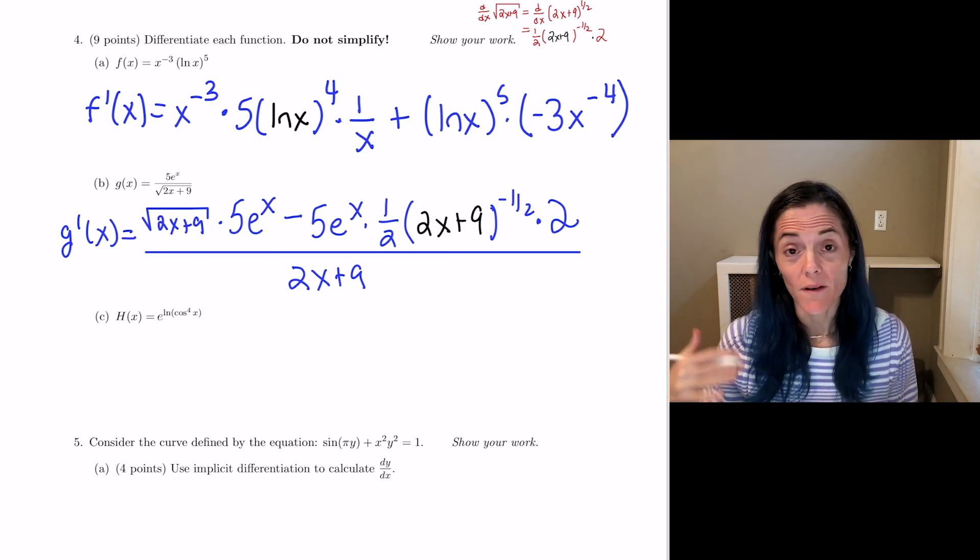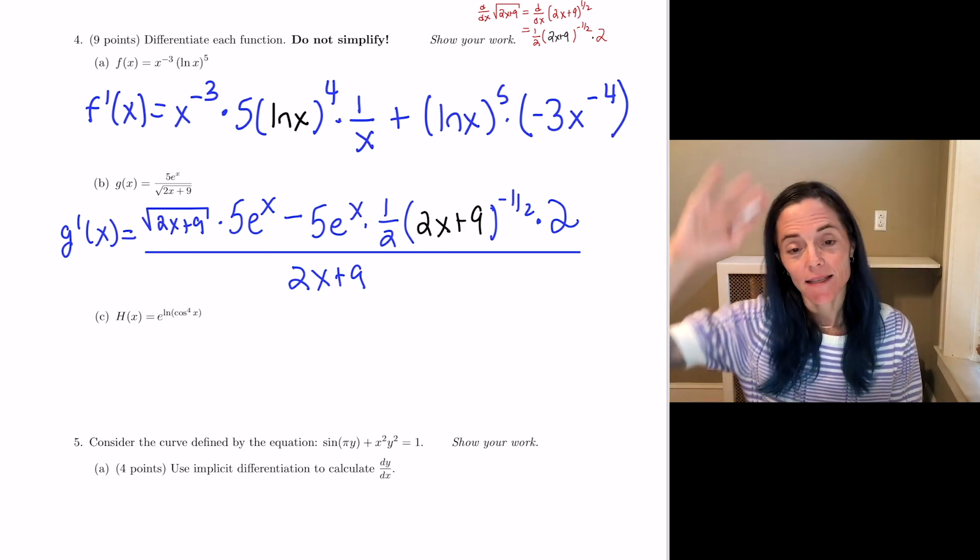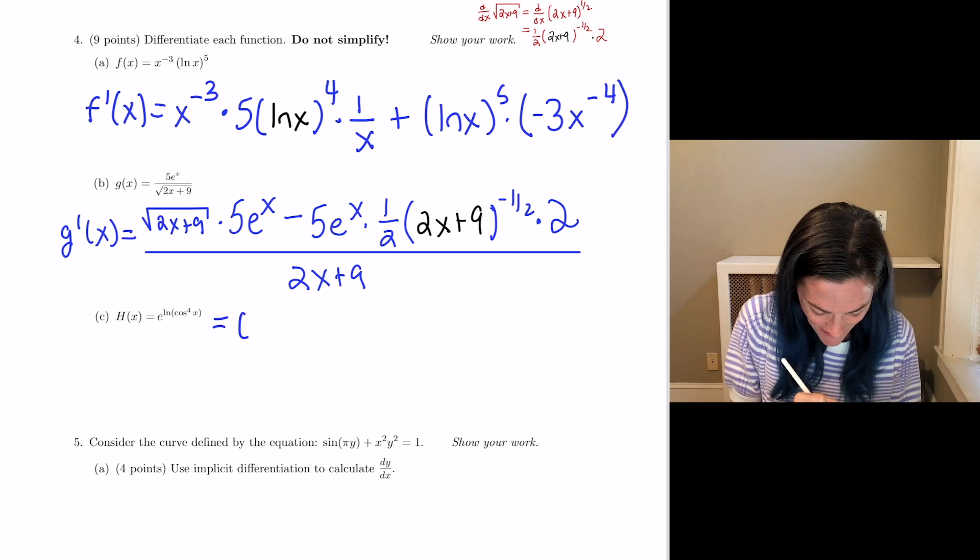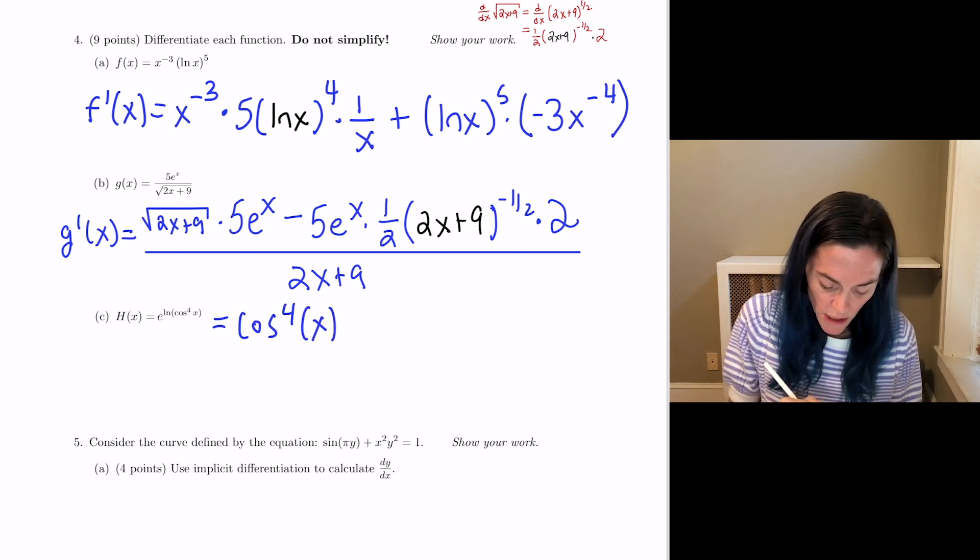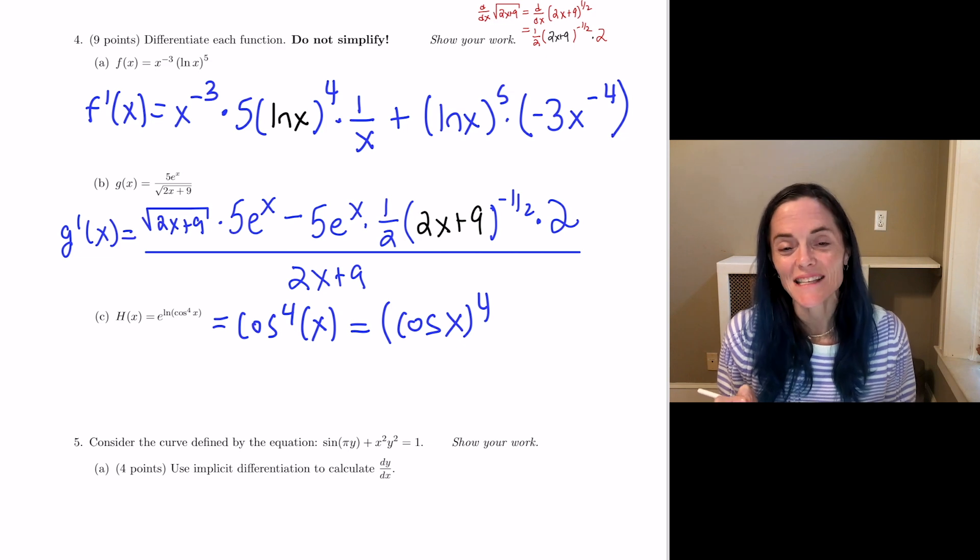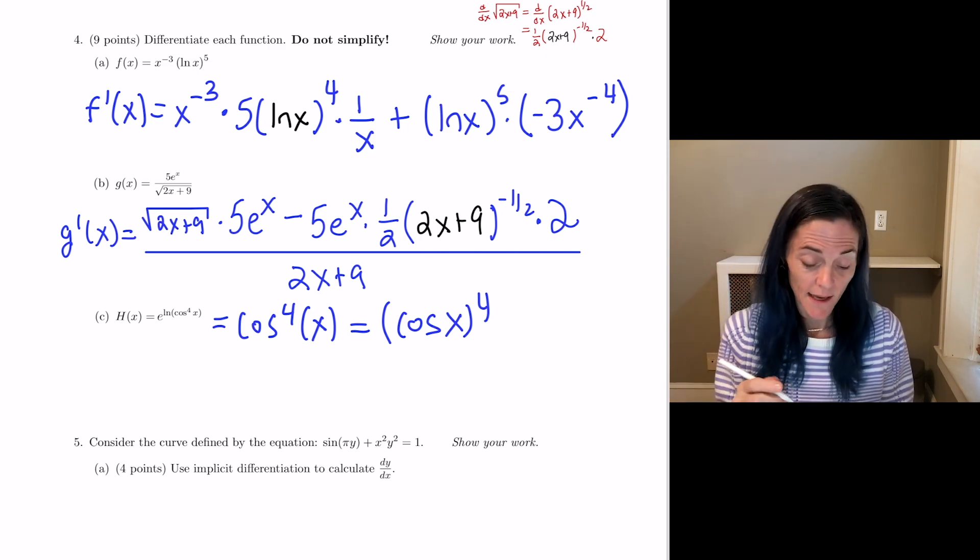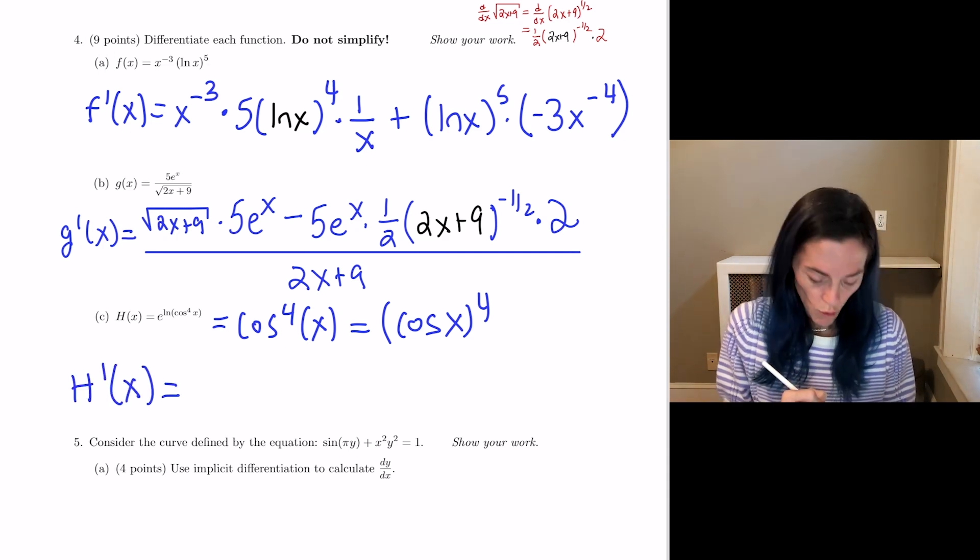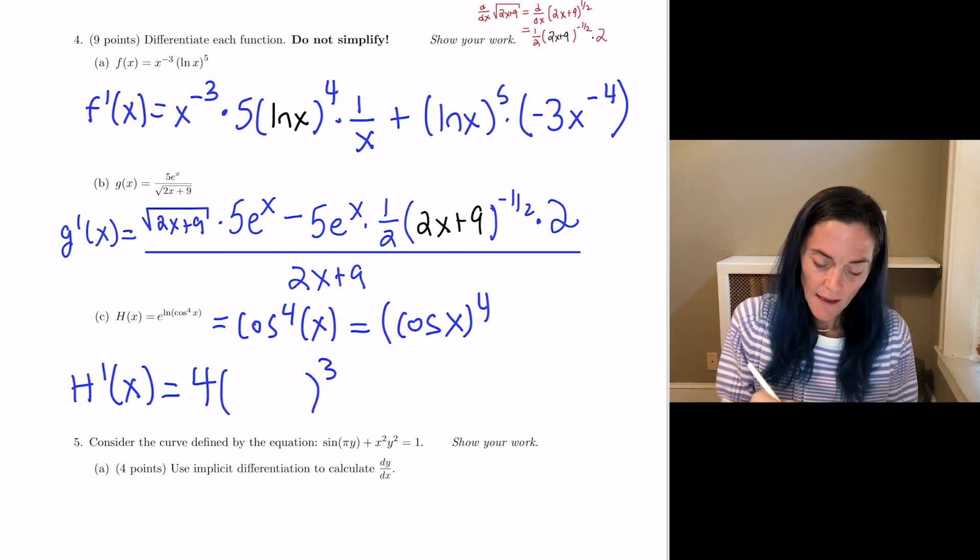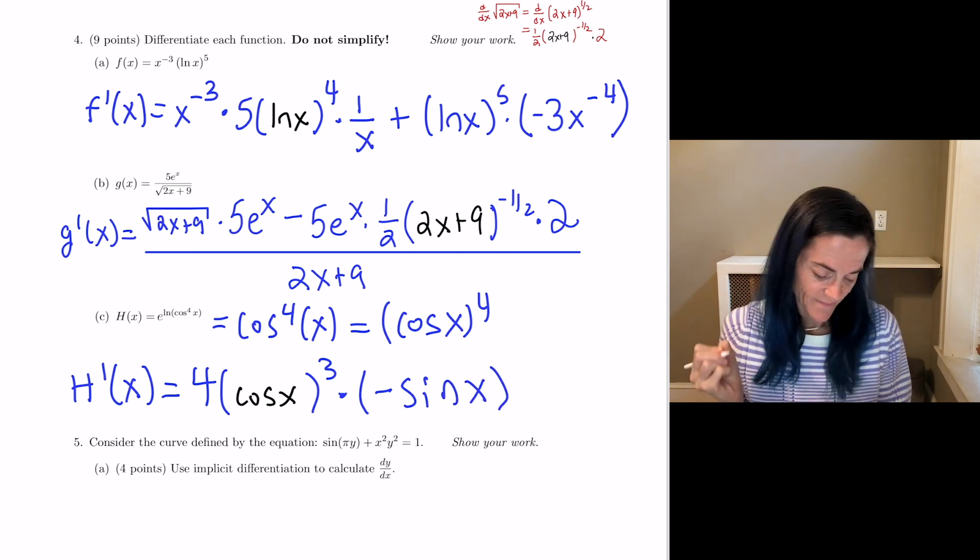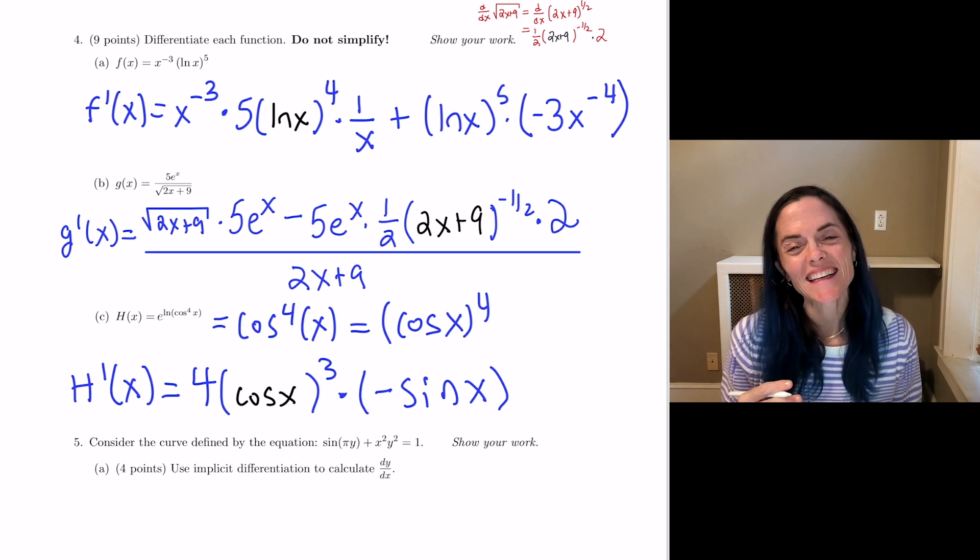The easiest way to approach the derivative of h of x is first to use that e to the ln of cosine to the fourth of x is just cosine to the fourth of x, which we know is like this, right? Cosine x to the fourth power. So this is my function. So much easier to use this property about e to the x and ln x, their inverse relationship. Use that before you differentiate. So now I just have chain rule, we have derivative of the outside, evaluated at the inside. And then times, well, the derivative of cosine is minus sine. This was number four on the spring 2024 final exam.